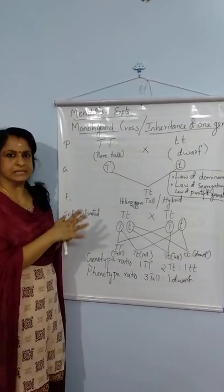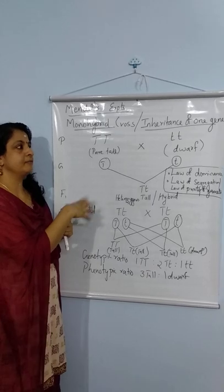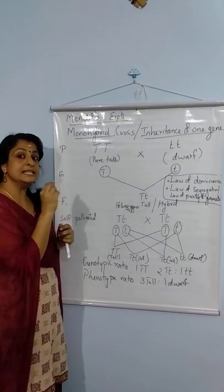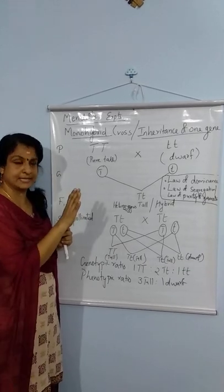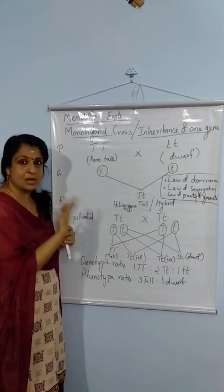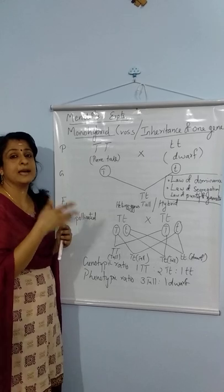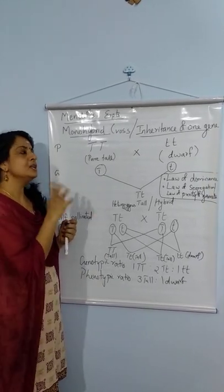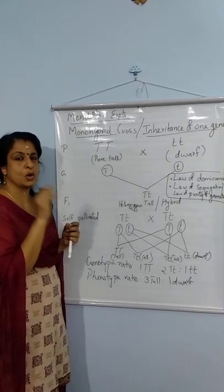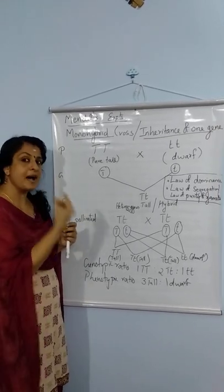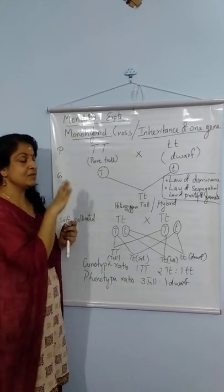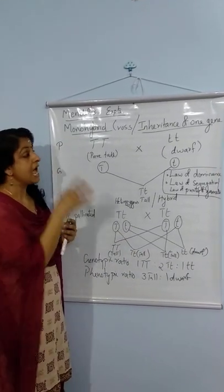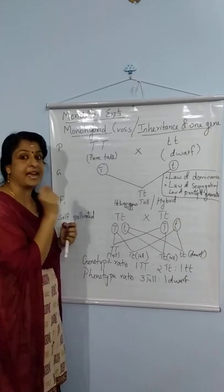Mendel also observed that characters pass from parents to offspring through discrete, stable units. At that time, microscopy was not available — the nucleus, chromosomes, and genes had not yet been studied. But still, he proposed that there are certain discrete or stable units which are passed from parents to offspring, and which can transmit characters from parents to offspring.